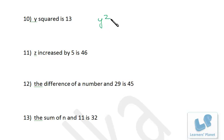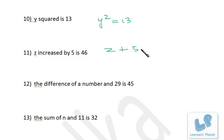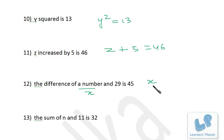y squared is 13. z increased by 5 is 46, so z + 5 = 46. The difference of a number — a number means x — so the difference of x and 29 is x minus 29, and that equals 45: x − 29 = 45.